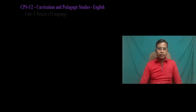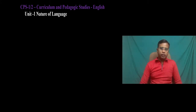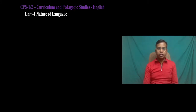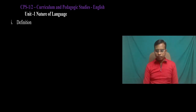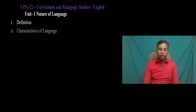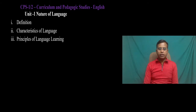So let us see the units and content of this paper. There are eight units. The first unit is Nature of Language. We will see some topics of language: the first is definitions — we have to study some definitions of language — then characteristics of language, then principles of language learning.